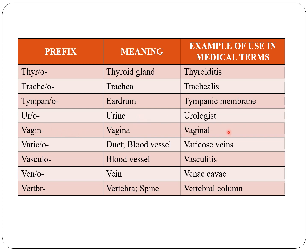Vagina or vagino indicates vagina, for example vaginal. Varico indicates duct or blood vessel, for example varicose veins. Vasculo also indicates blood vessel, for example vasculitis. Veno indicates vein, for example vena cava. Vertebro indicates vertebrae or spine, for example vertebral column. Spondylo also indicates vertebrae.